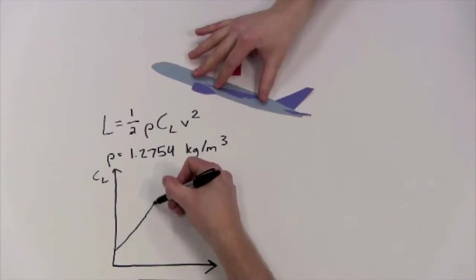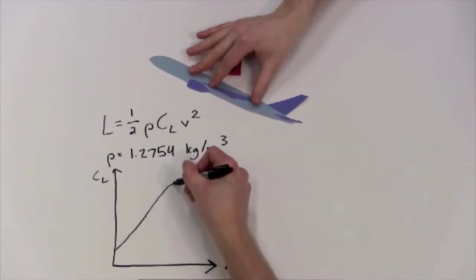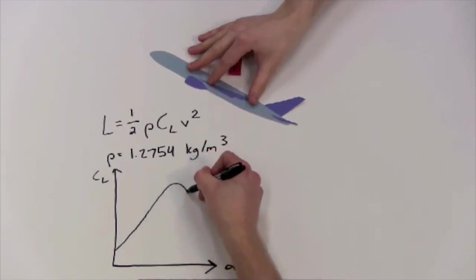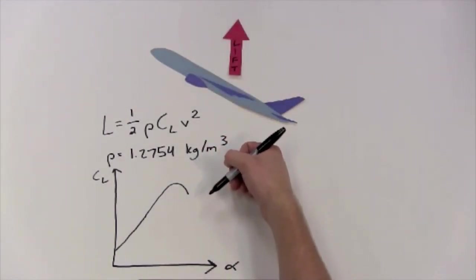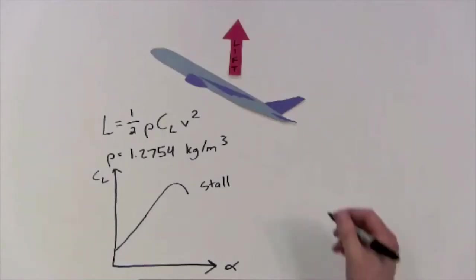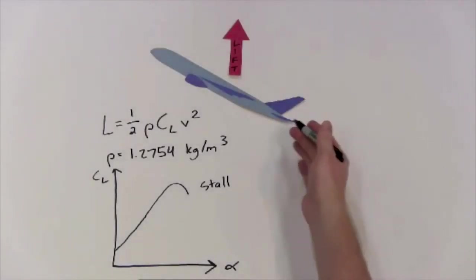This is a good thing because we have more lift. As we continue to increase, we eventually reach a point where we keep pitching up but the lift starts decreasing. This is something called stall and it's not a good thing, so we generally avoid trying to pitching up this much.